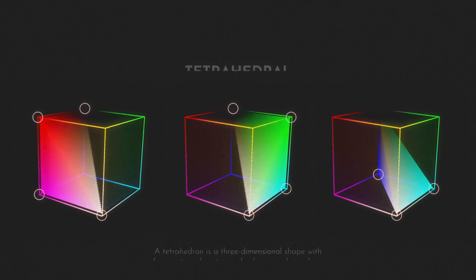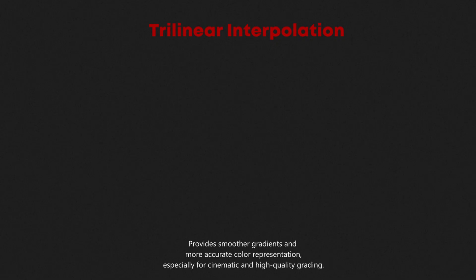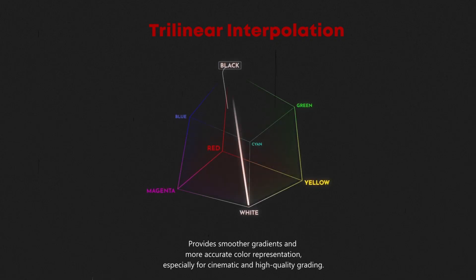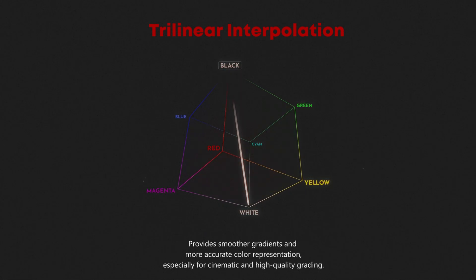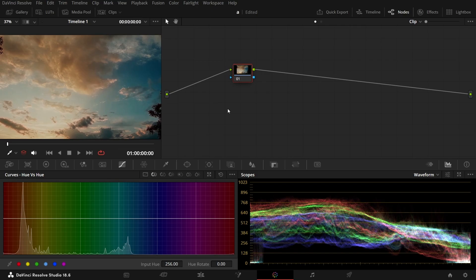Trilinear is fast but provides lower quality. On the other hand, tetrahedral provides high-quality rendering but could be slow in playback. Alright, let's first try trilinear interpolation.